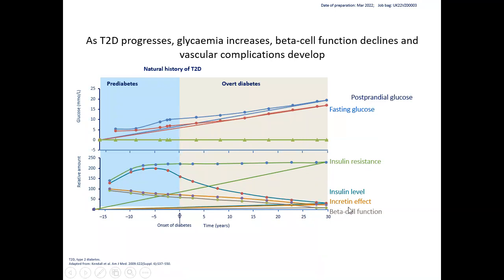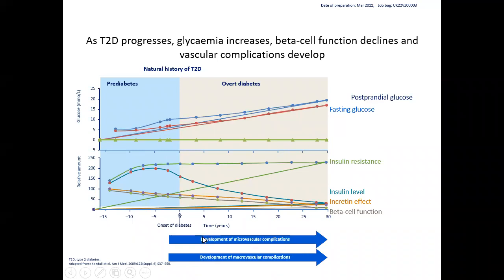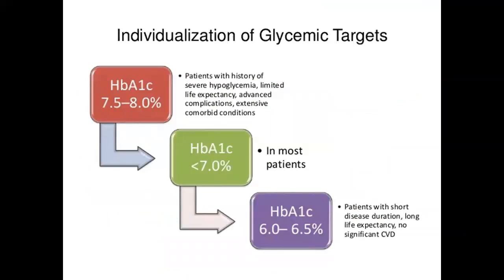The incretin effect is one of the most important factors in the development of diabetes. Incretins are peptides released from the gut mucosa in response to food intake, resulting in a glucose surge. Over time, because of the hyperglycemic state, the gut mucosa becomes faulty and is unable to secrete enough incretin hormonal peptides, which in turn stimulate the release of insulin from the beta cells of the pancreas. This contributes to the development of microvascular and macrovascular complications.